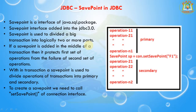Within a transaction, a SavePoint is used to divide operations into primary and secondary parts. To create a SavePoint we need to call the setSavePoint method of the connection interface. I am dividing the operations into two parts — the primary part and the secondary part — and before starting the secondary part, I am creating a SavePoint using the connection object's setSavePoint method.